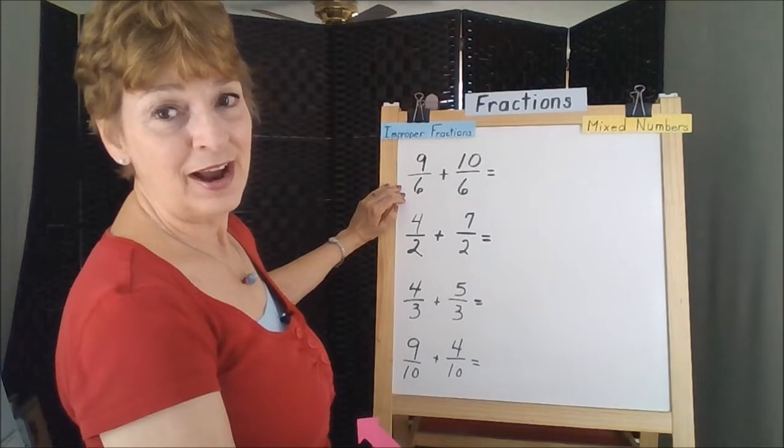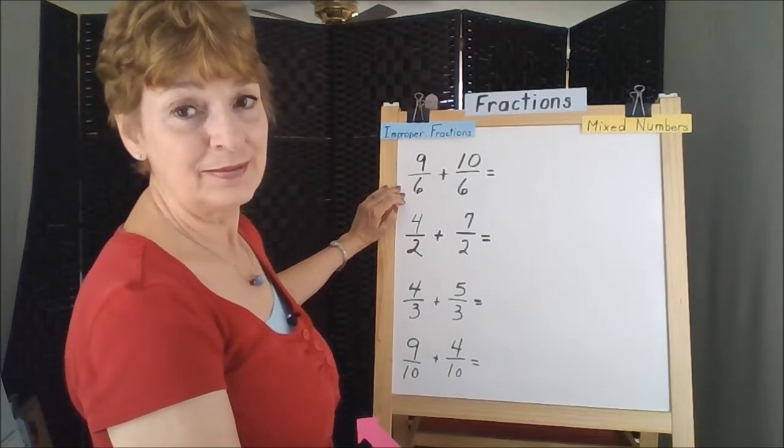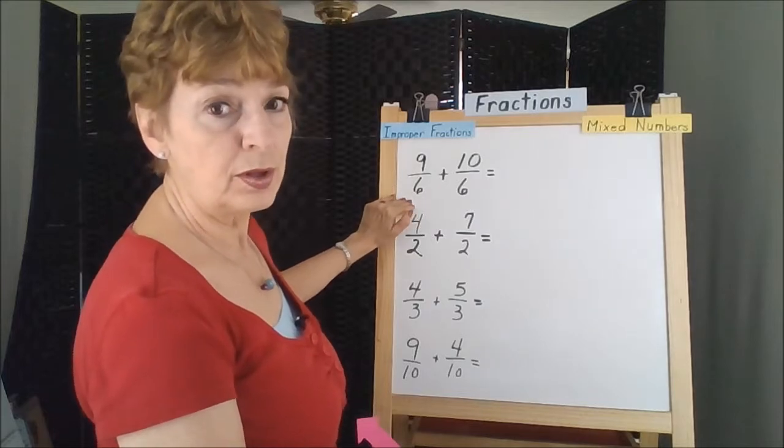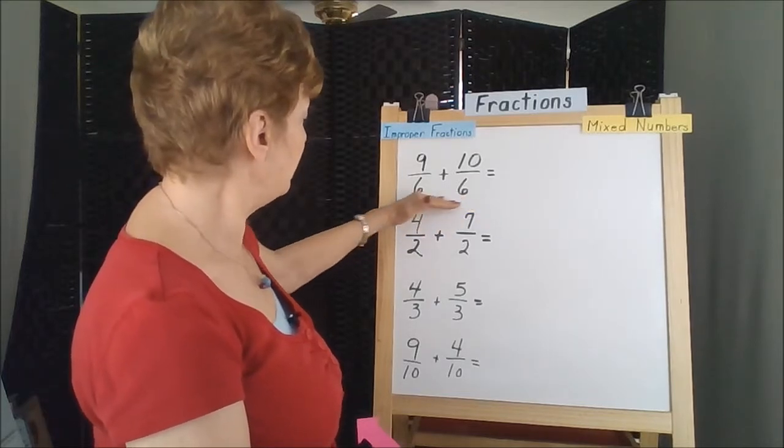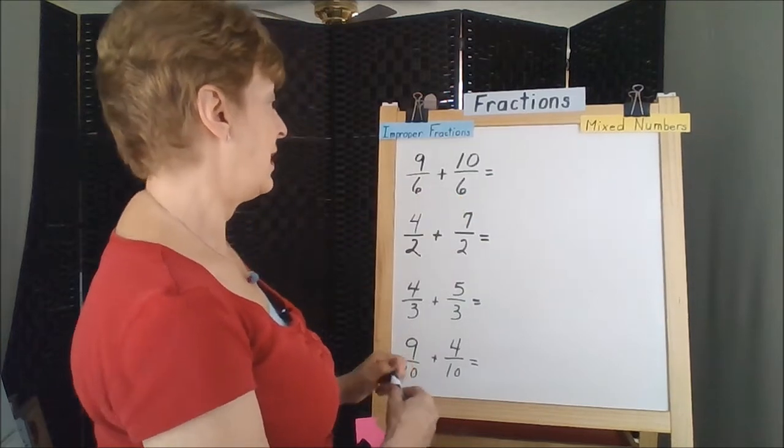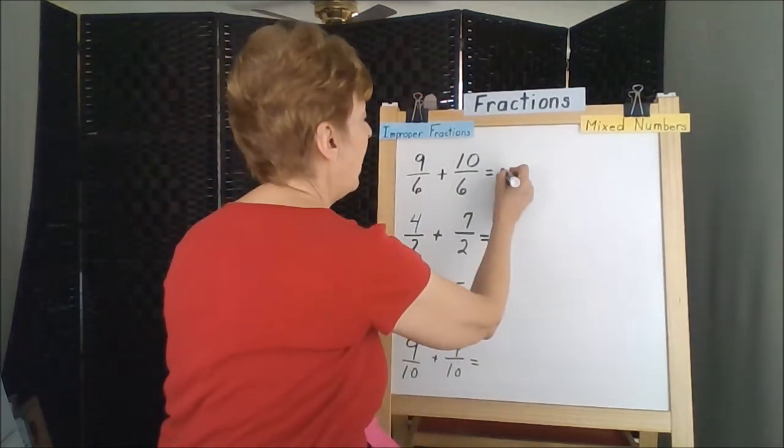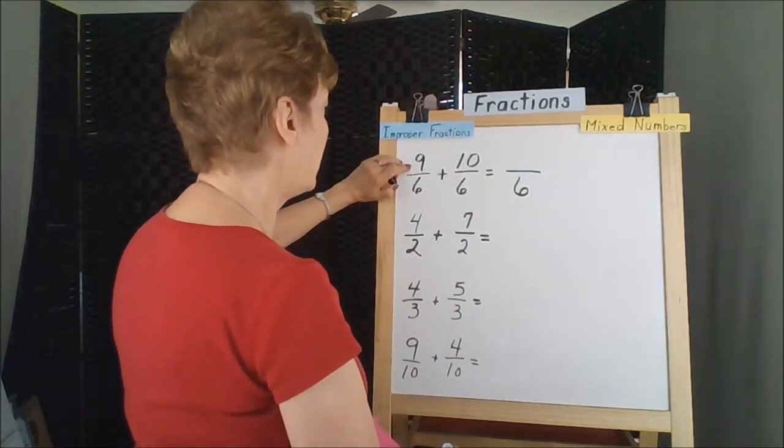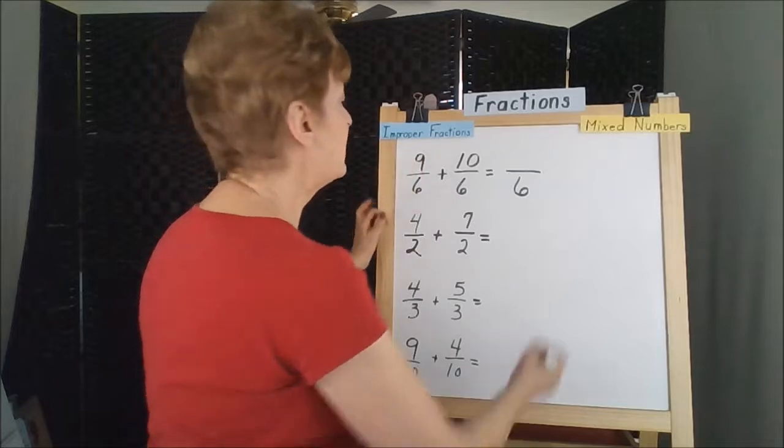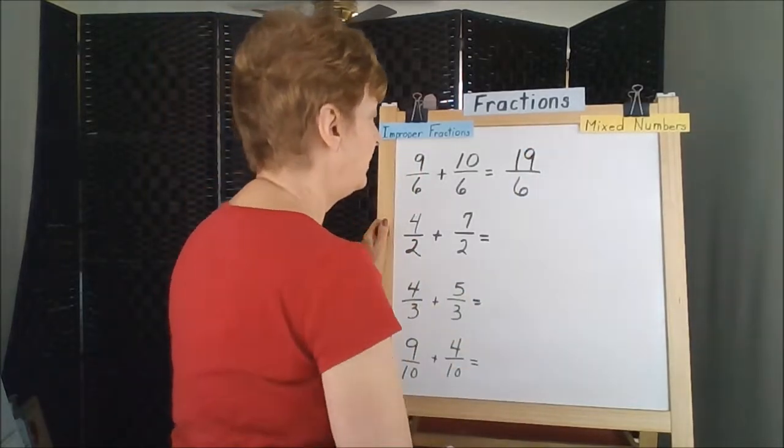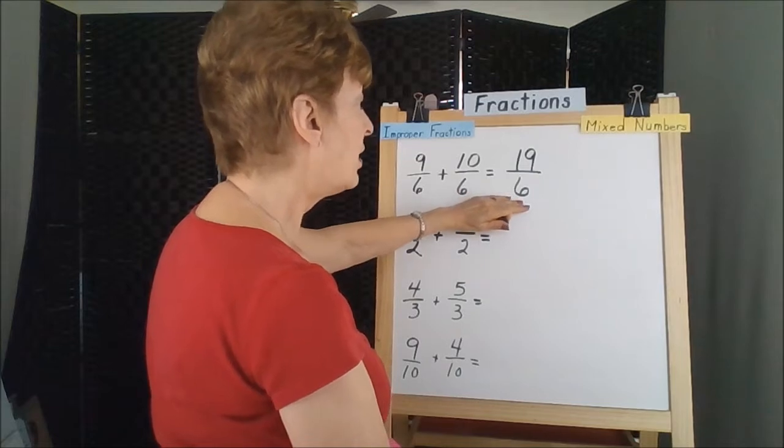When you add and subtract fractions, you have to have the bottom numbers be the same. So that's the very first thing that we'll look for. Are the denominators the same in this fraction? Yes, so we can just copy the number and then we're going to add the tops. 9 plus 10 is 19. This answer is a top heavy fraction.